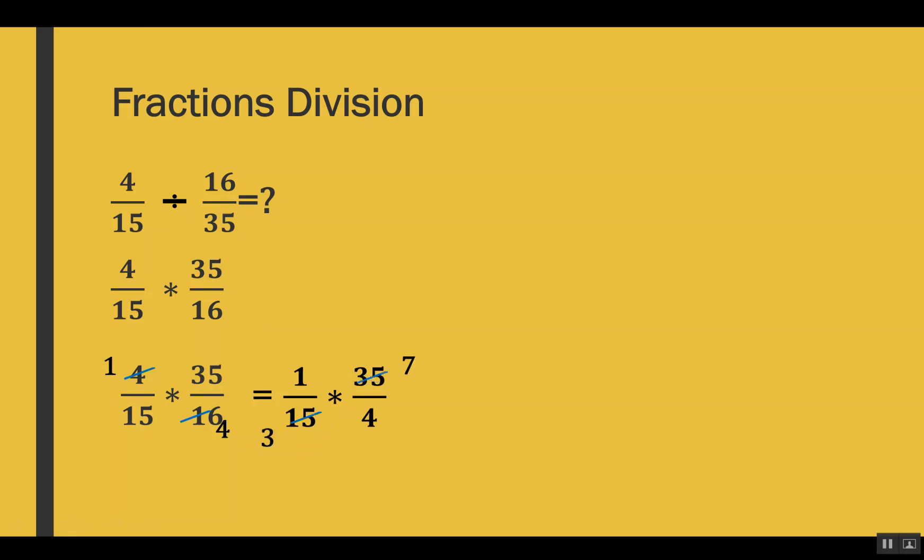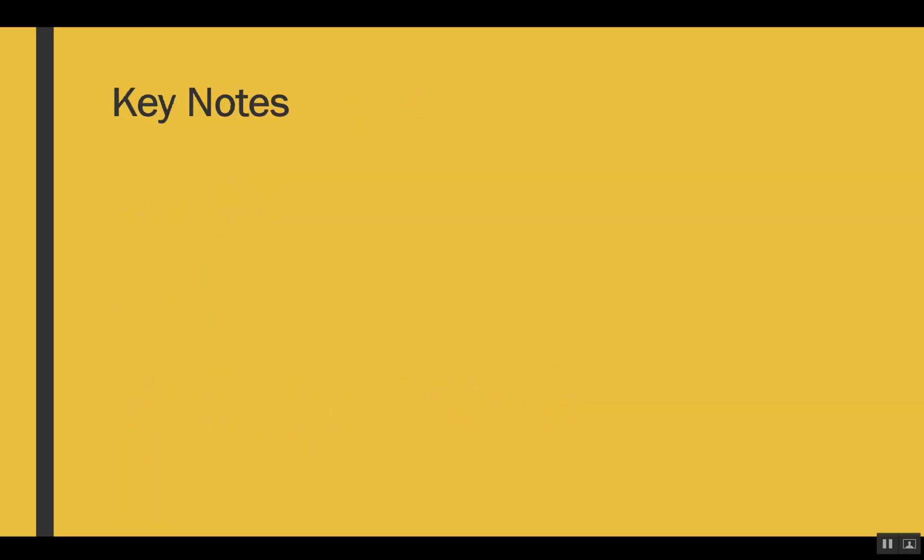We multiply numerator with numerator and denominator with denominator, and we get 7 out of 12 as the result. Friends, these were some examples through which I tried to explain fraction multiplication and division. Like my other videos, here also I want to give you the key notes so that it is very easy for you to remember and do fraction multiplication and division.